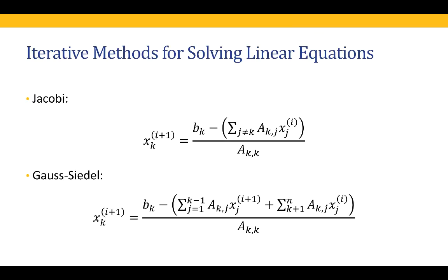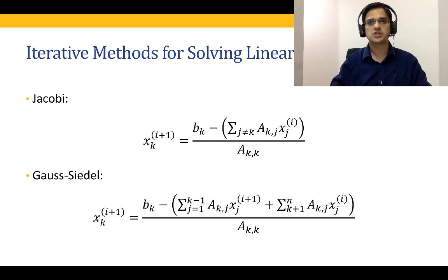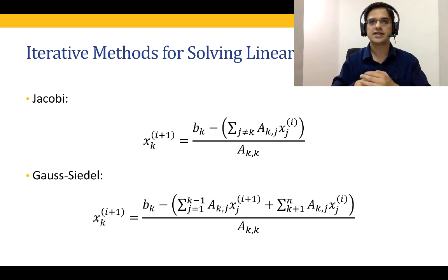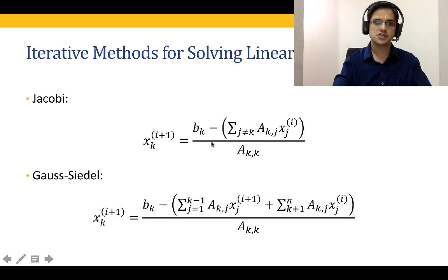In Gauss-Seidel and Jacobi iterations, what we do is rewrite each and every equation so that the first equation can be used to obtain the solution to the first variable x1, the second equation is rewritten to obtain solution to the second variable x2, and so on up to xn. For example, for the first equation we write a11 x1 equal to b1 minus a12 x2 minus a13 x3 and so on up to a1n xn, then divide the whole thing by a11. That is the strategy used both in Jacobi iterations as well as the Gauss-Seidel iteration.